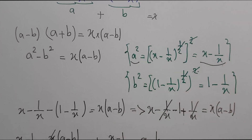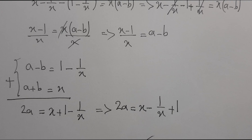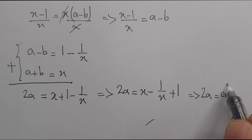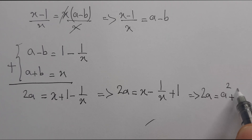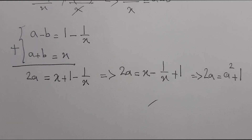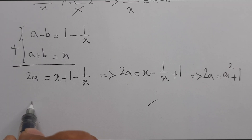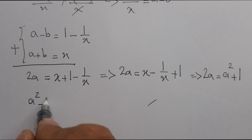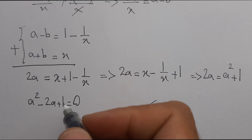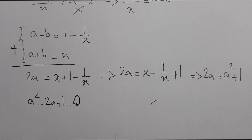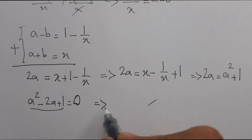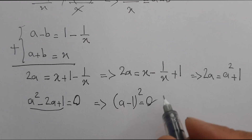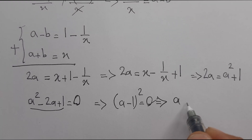So we can put here: 2a equals a squared plus 1. We can bring everything to one side: a squared minus 2a plus 1 equals zero. Here we can find a — this is a minus 1 squared equals zero, so a equals 1.